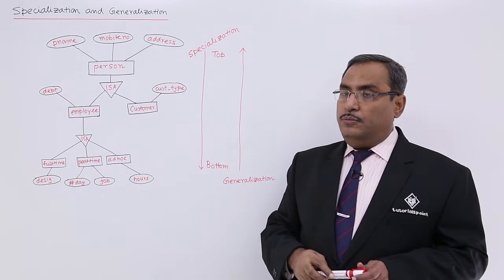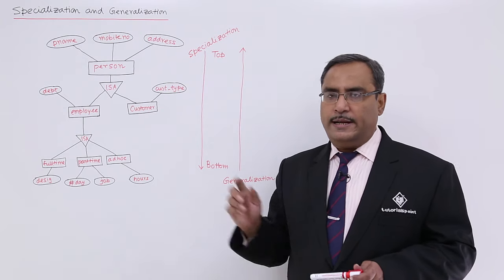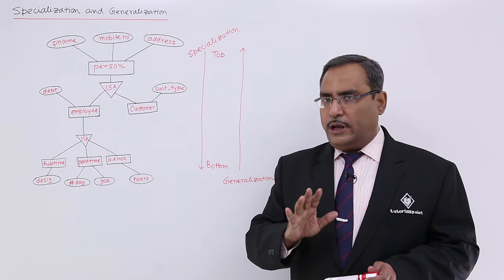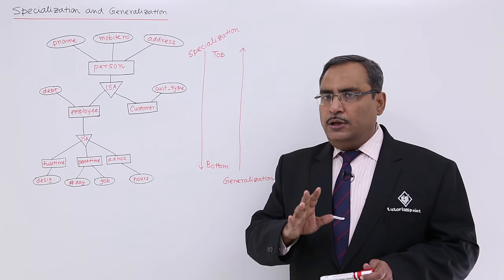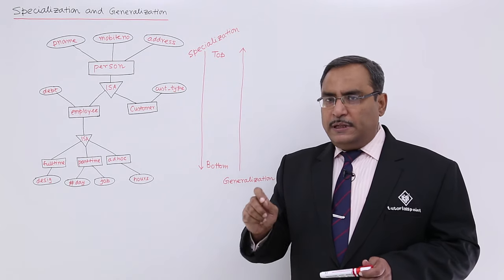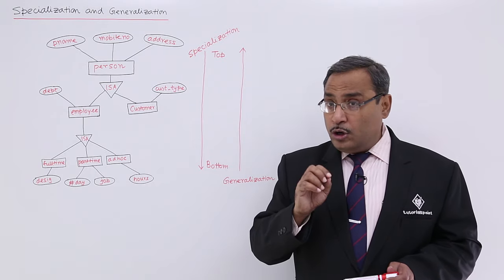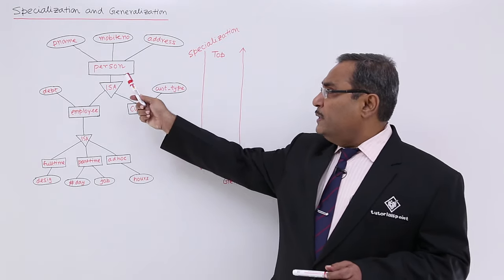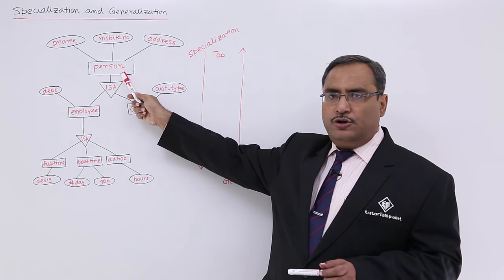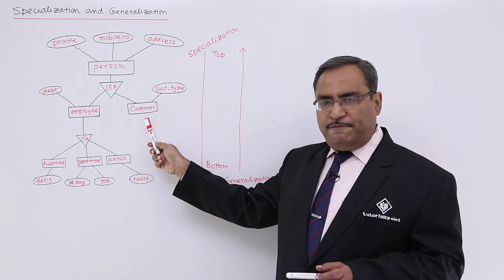So now, how to form tables out of this particular ER diagram? Let me write the respective schemas. The thing is that I shall not form tables or schemas against all entities. Whenever this person has got an 'is a' relationship, against person I shall not draw any kind of schema or table.